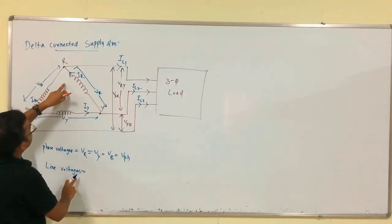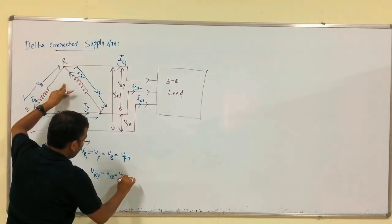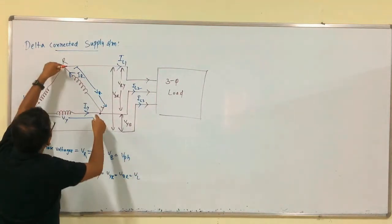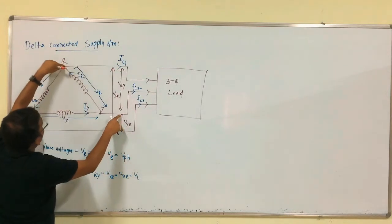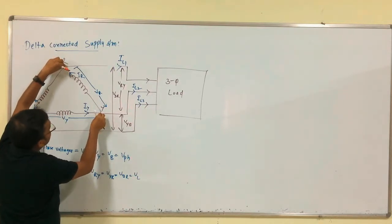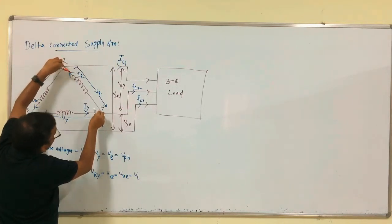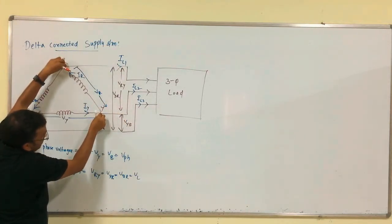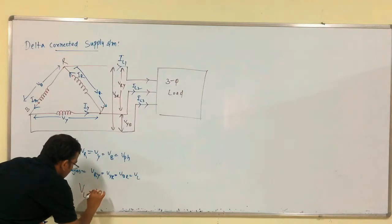Next, the line voltages: V_RY = V_YB = V_BR = V_L. Now, V_R is present between these two nodes, and the line voltage V_RY is also present between these same two nodes. Therefore, in the delta-connected supply system, the line voltage equals the phase voltage.